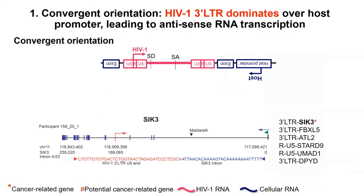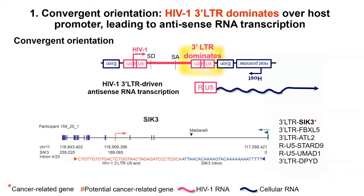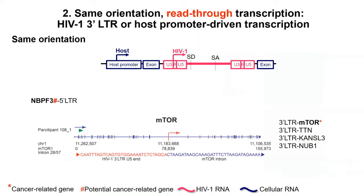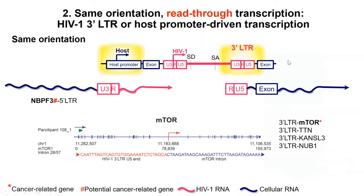When HIV integrates in convergent orientation, we found that in six out of six cases it's the 3' LTR which dominates and drives the transcription of antisense host RNA. We still don't know the role of this. When HIV is integrated in the same orientation, either the host can drive a read-through into HIV, or HIV can drive a read-through into the host. We see this in several genes, for example in mTOR, which we think is interesting.